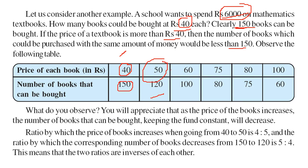So what you have observed? You can say that as the price of book increases, the number of books that can be bought, they are decreasing. But the funds are constant. So ratio by which the price book increases when going from 40 to 50 is 40 by 50 is 4 is to 5. And the ratio in which the corresponding number of books decreases is 150 by 120, which is 5 by 4. So 4 by 5 is inverse of 5 by 4. That is the two ratios are inverse of each other.